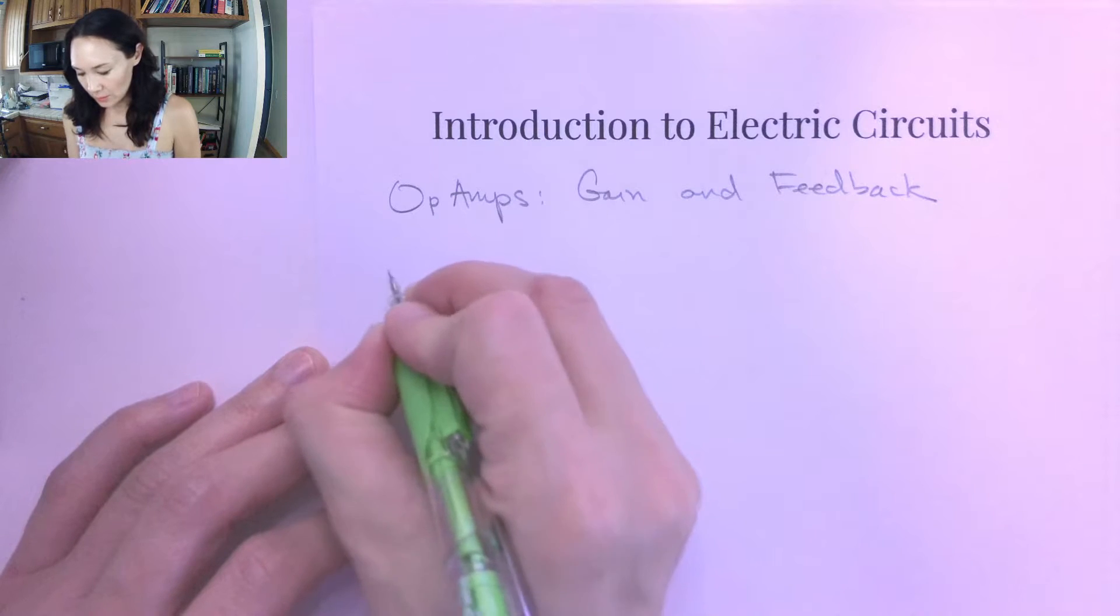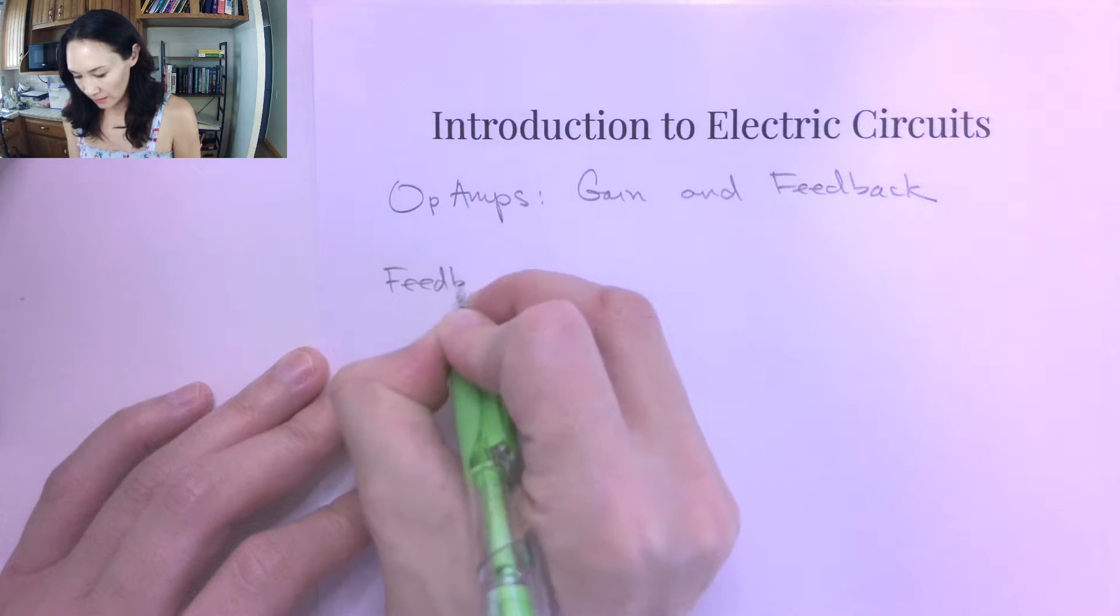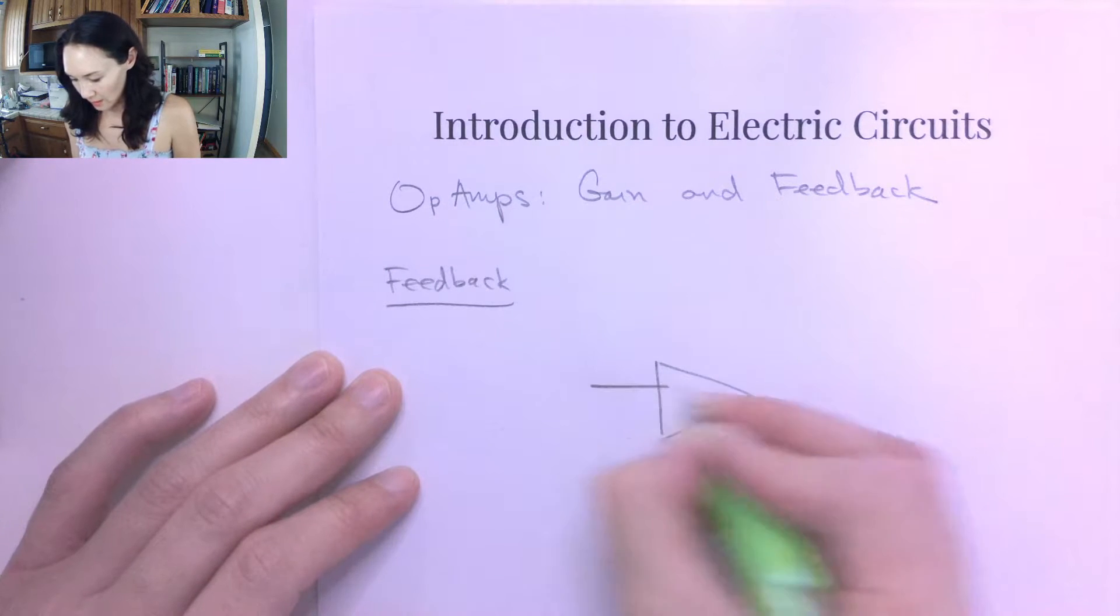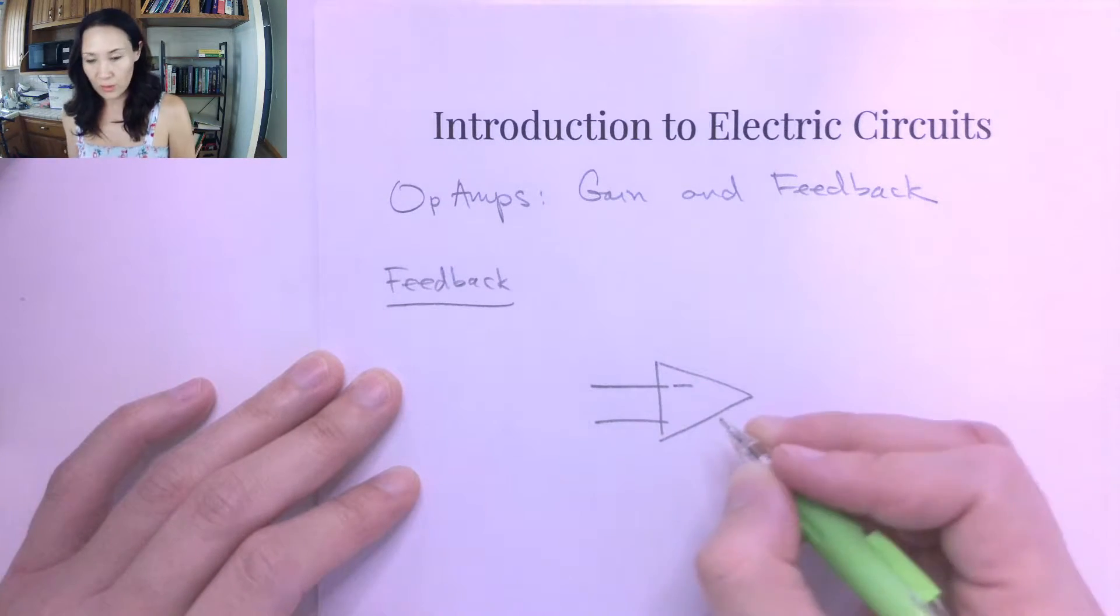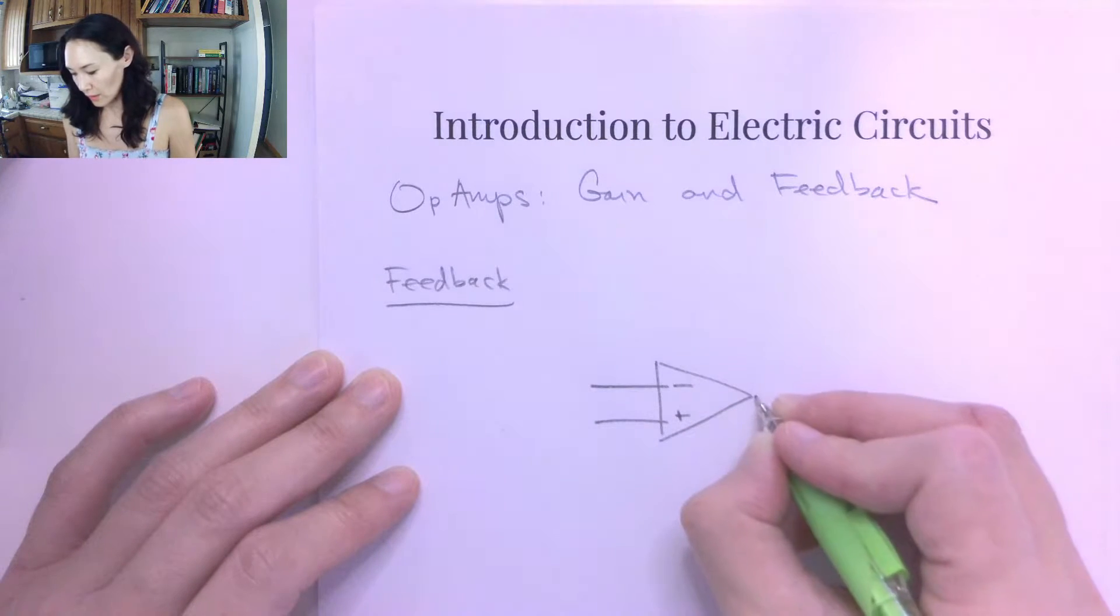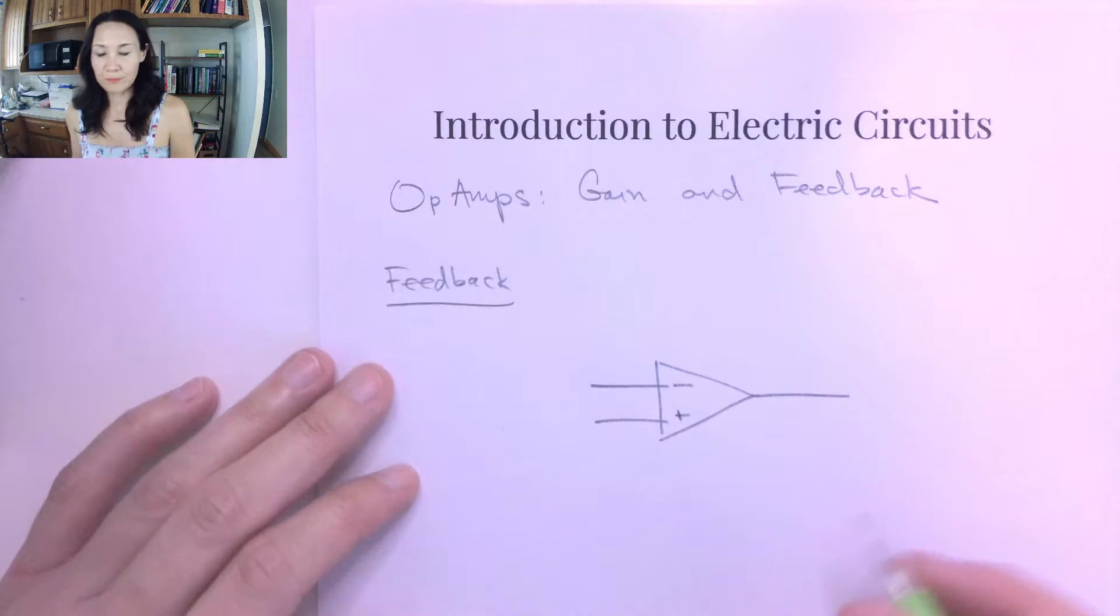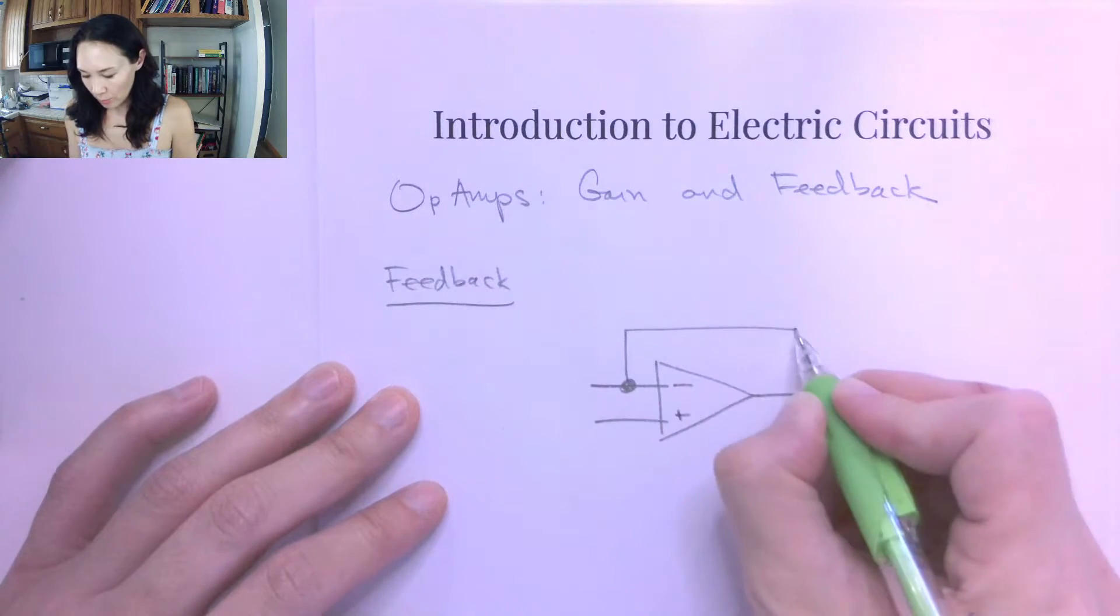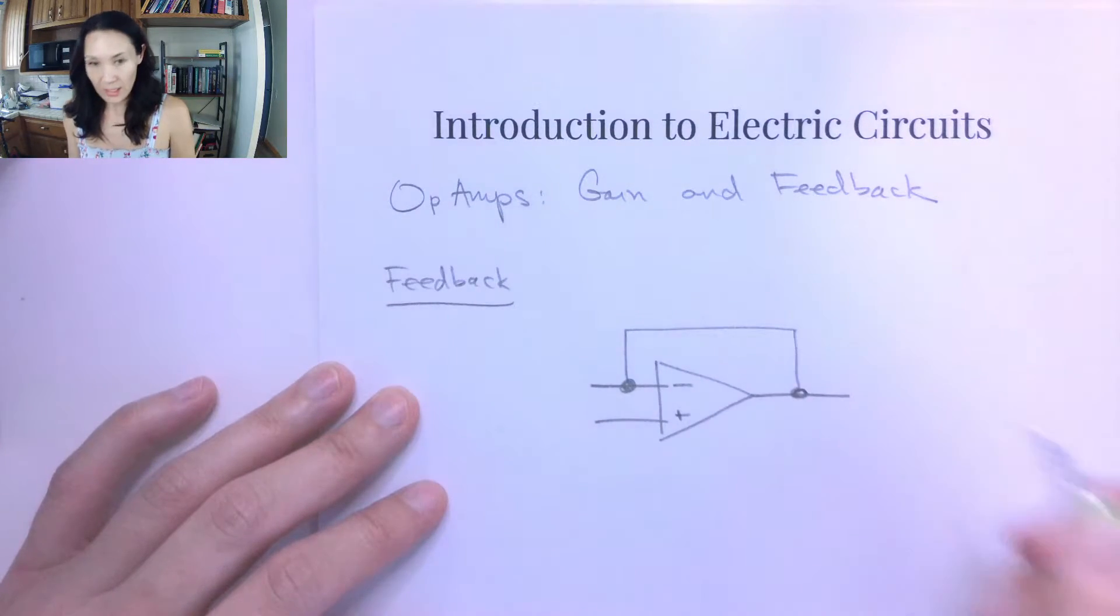So let me show you what feedback is. If we have an op amp like this, and remember we have two inputs, we've got the inverting input and we have the non-inverting input, and here's our output.